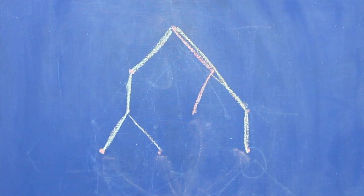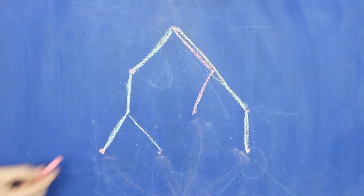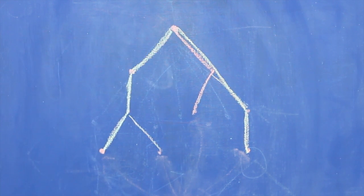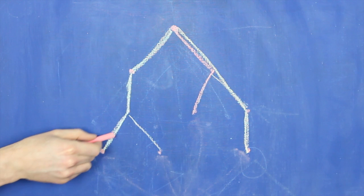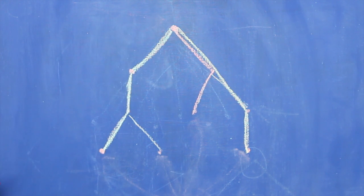Now we want to understand when two nodes are on the same branch. Here's a way of testing: if you can trace a path from one of the nodes to the other one just by going up the tree — not up and down —